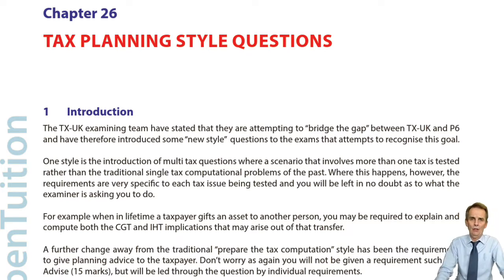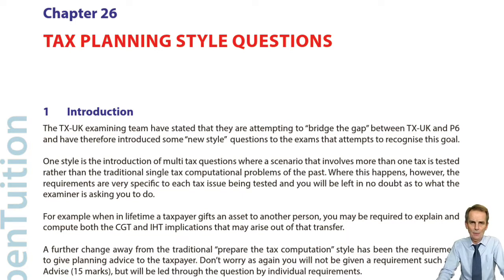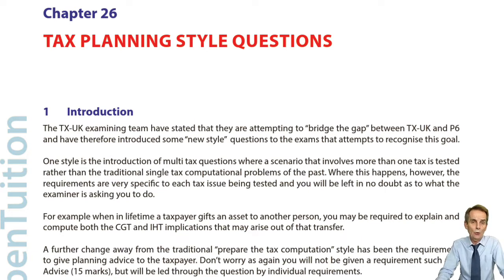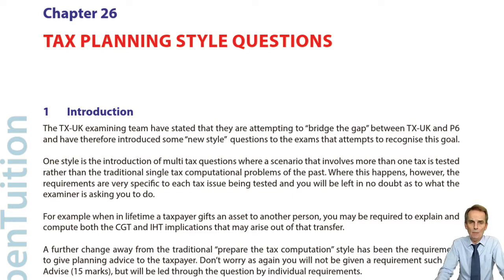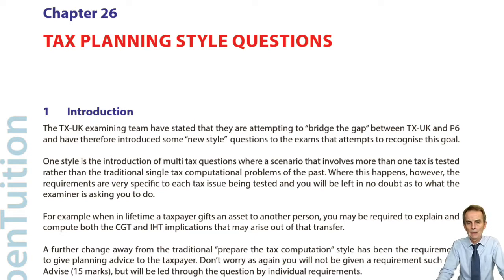But basic tax avoidance is permitted in terms of arranging your taxation affairs in such a way as to reduce your overall taxation liability. We saw that in the previous session when dealing with spouses or civil partners, specifically in relation to income-producing assets. The heading we saw was joint income arising from a jointly owned asset. The rules were that if you have civil partners or married couples with joint ownership of an income-producing asset, we applied the basic 50-50 rule and just split that income equally between them.